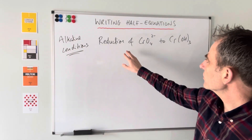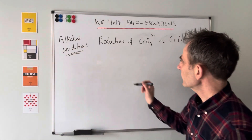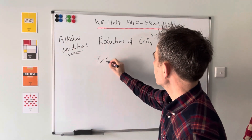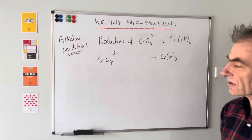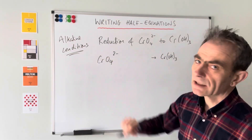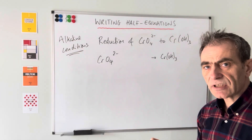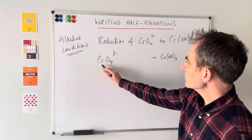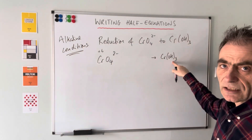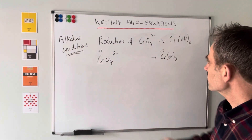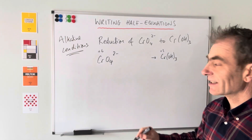Now for the alkaline conditions. I'll use this as the worked example: the half equation in alkaline conditions for the reduction of CrO4 2 minus to Cr(OH)3. We do things in a slightly different order for alkaline conditions. Step one: look at the change in oxidation number and put the electrons in first. Chromium in CrO4 2 minus is plus six; in Cr(OH)3, each hydroxide is negative one, so chromium is plus three. It's been reduced - it's gained three electrons.